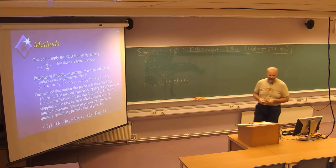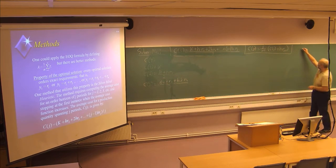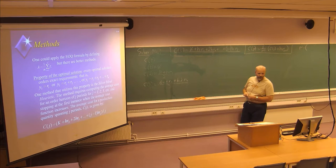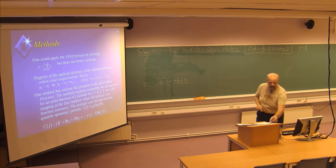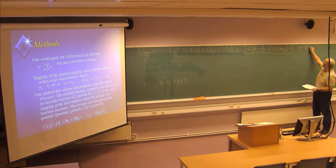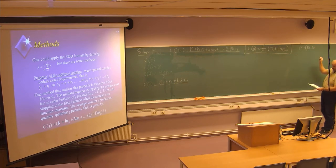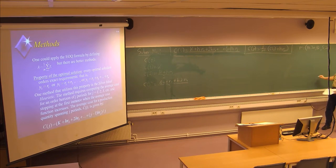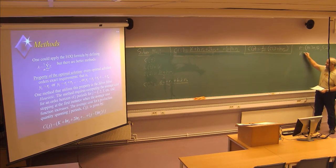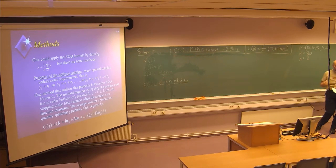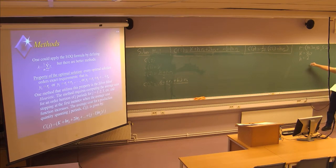Let's look at a smaller example — example 7.3 from the textbook — where requirements for five coming weeks are: R₁=18, R₂=30, R₃=42, R₄=5, R₅=20. We are given a setup cost K of 80 and a holding cost H of 2 per week. Storing one item from one week to the next costs 2 units of currency.